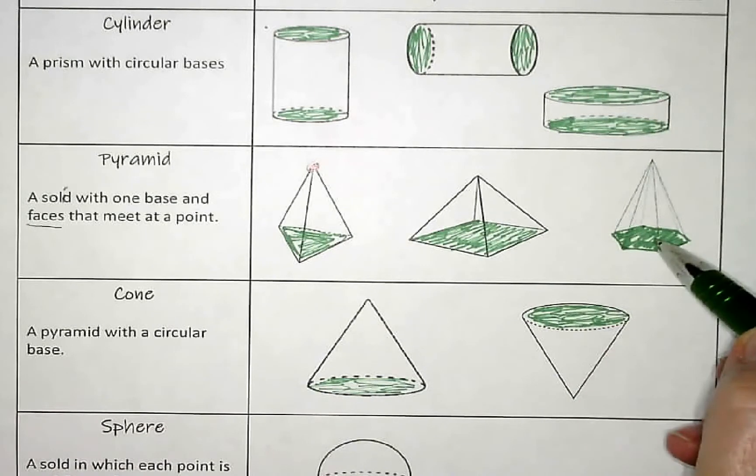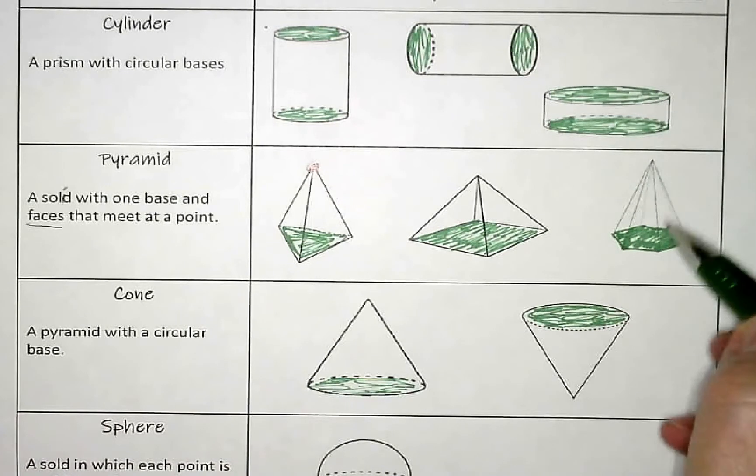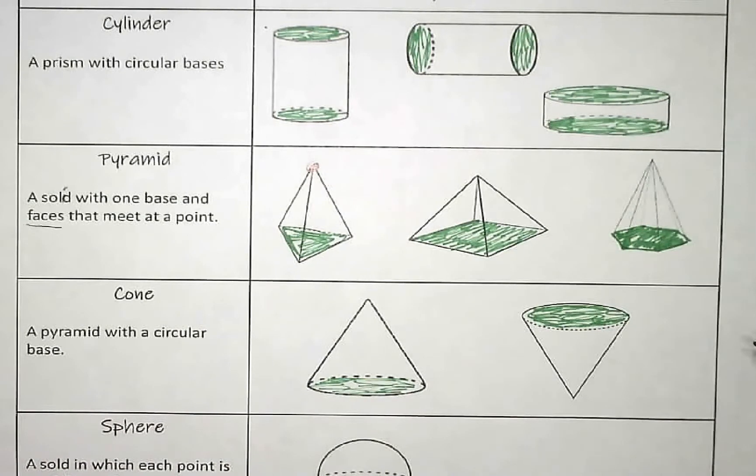This is a hexagonal pyramid. The base is a hexagon. It's going to come up to this point here and the six faces are all going to be identical.